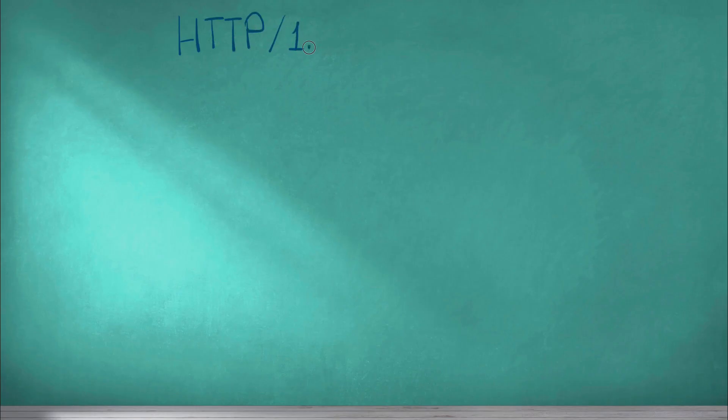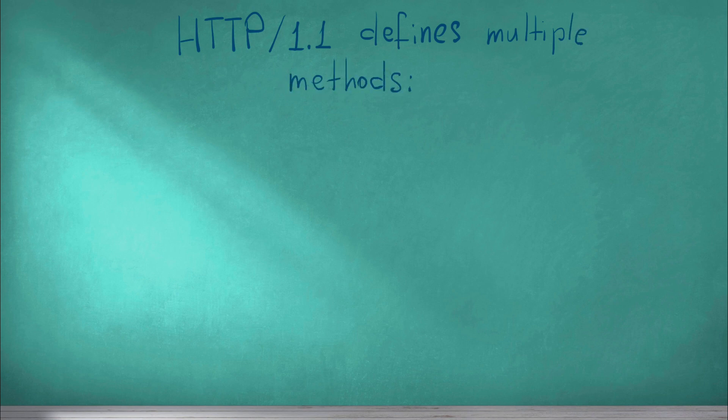HTTP 1.1 defines the set of methods to express client intentions. These method names are case sensitive and they must be used in uppercase. The first is GET and it's used to retrieve information from a given server using URI. GET requests should only retrieve data without any modifications or side effects on the data at the server site. HEAD is the same as GET but returns only the status line and the header section in the response. So it doesn't have a body.